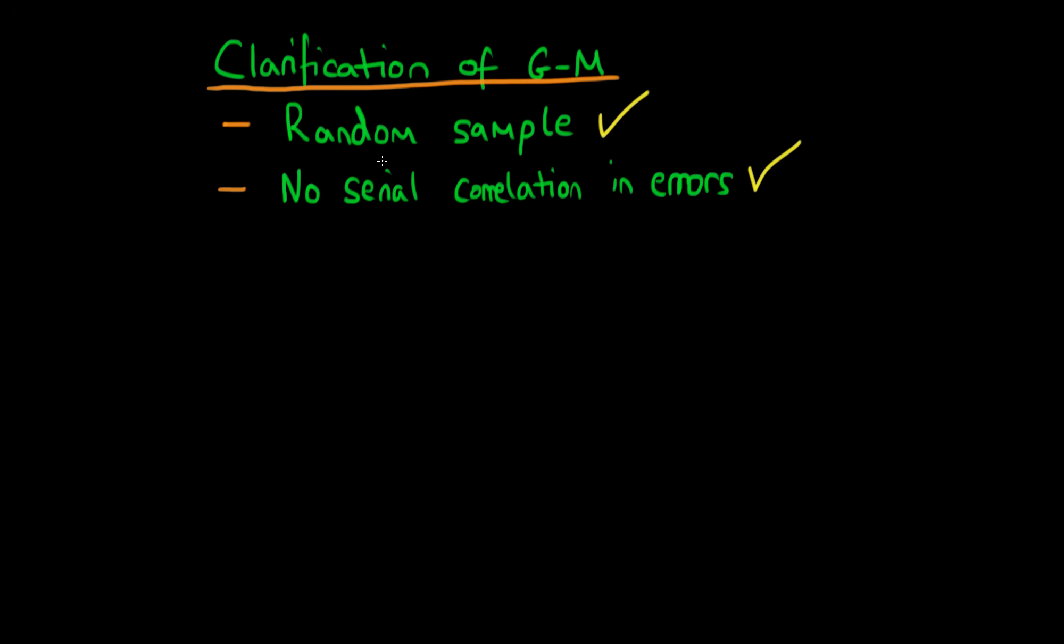It turns out that if we have a random sample, this necessarily implies that there must be no serial correlation in errors, or there's no autocorrelation amongst errors, which is another way of stating it.